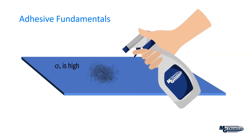Another way to increase surface energy is chemically. With that, we have to consider the type of substrate. If we have a plastic surface, we'd want to use a more aggressive organic solvent — something like acetone, MEK, or methylene chloride — which reacts with the plastic and introduces new imperfections needed for adhesion. With a metallic surface, we'd want to use an acid, which has the same effect — it attacks the surface and creates pits and imperfections that help with adhesion.